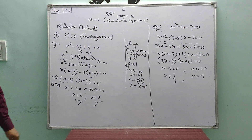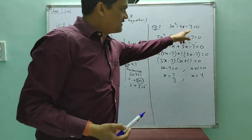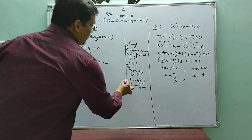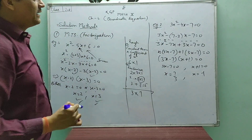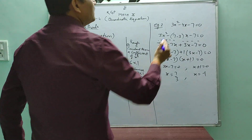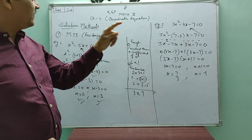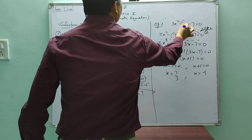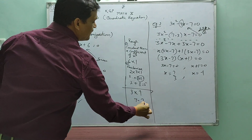Now another example on the right-hand side: 3x squared minus 4x minus 7 equals to 0. In the same manner, we take the coefficient of x squared, which is 3, and the constant term, which is 7. Since the sign before the constant term is minus, we have to find their difference. The difference must equal the coefficient of x, which is 4. Obviously, 7 minus 3 equals 4.